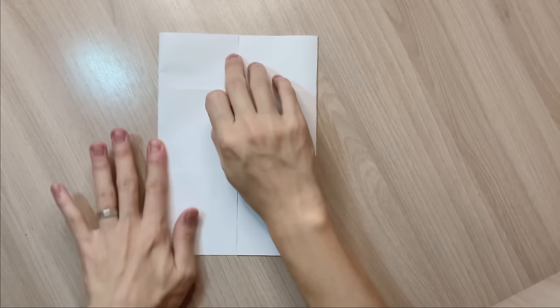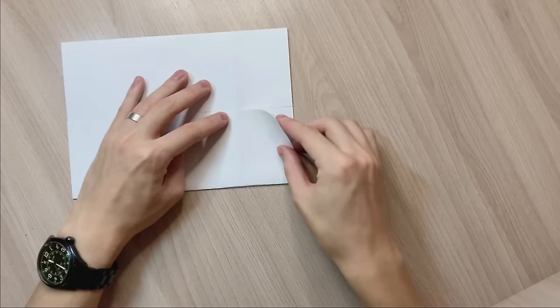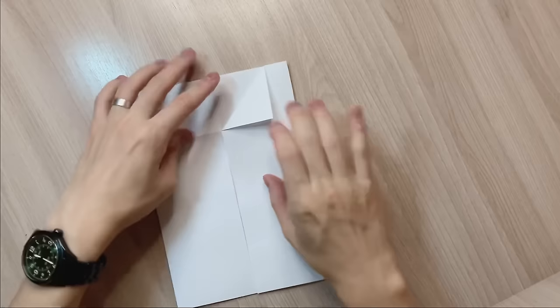Now for the next step you're gonna grab one layer of paper here at the top and fold it towards the crease. And repeat it on both sides.